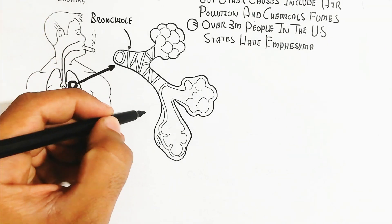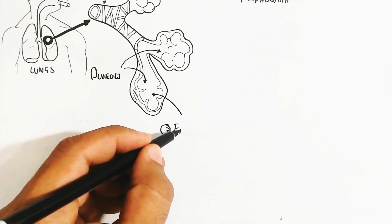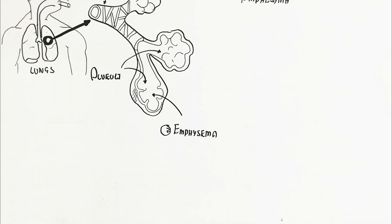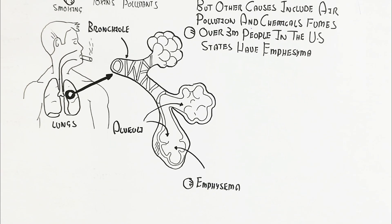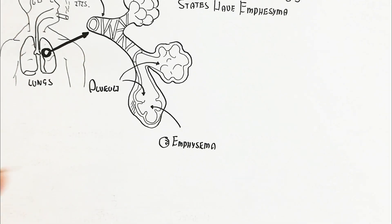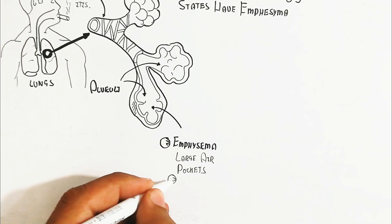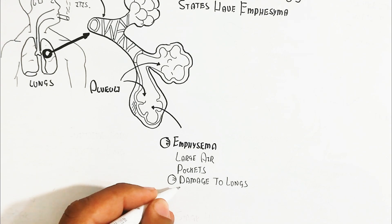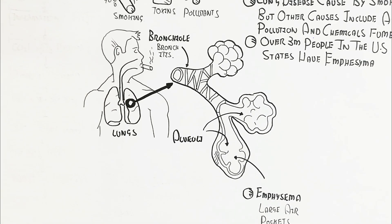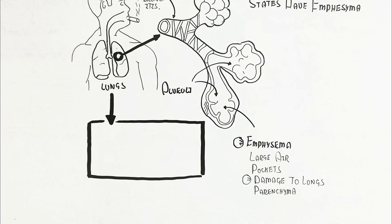The bronchioles constrict and harden with increased thickness. In emphysema, the alveoli rupture, decreasing surface area. The air sacs become damaged, creating large air pockets that lead to damage of the lungs and parenchymal cells. This decreases surface area, leading to less oxygen absorption in the blood.